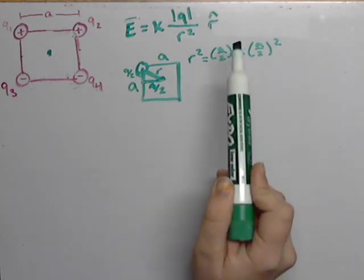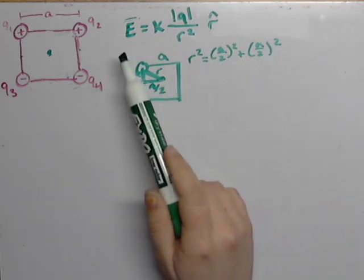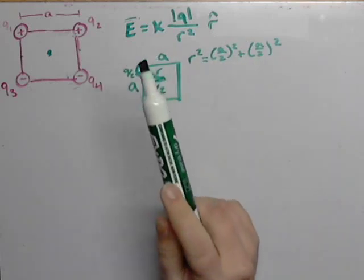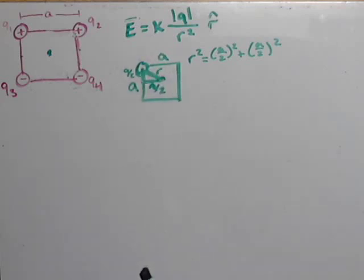Now we have an equation. We have the R. We know that the electric field, the magnitude, is going to be the same at each point. Let's now focus on the first question. What is the direction of the net electric field due to these points?